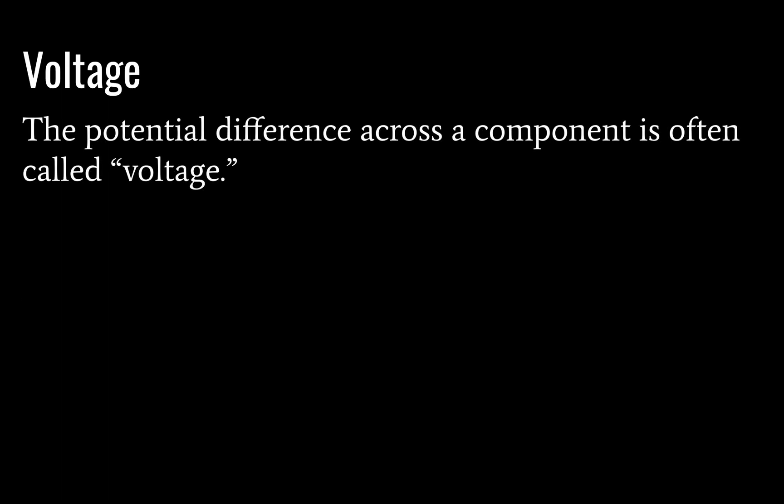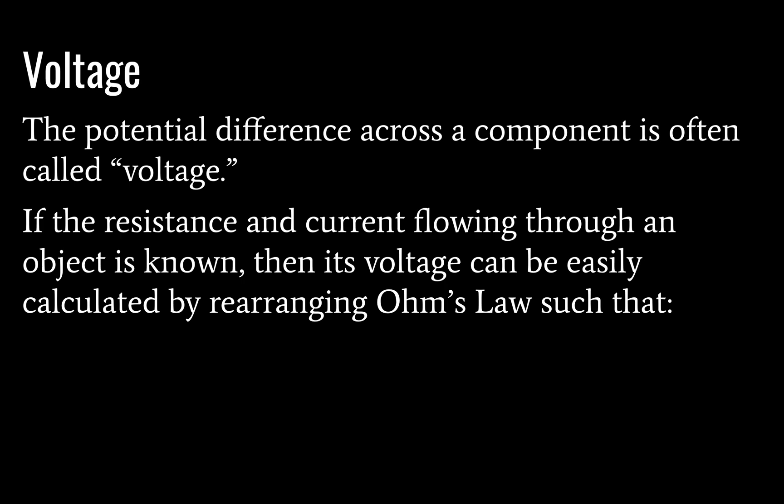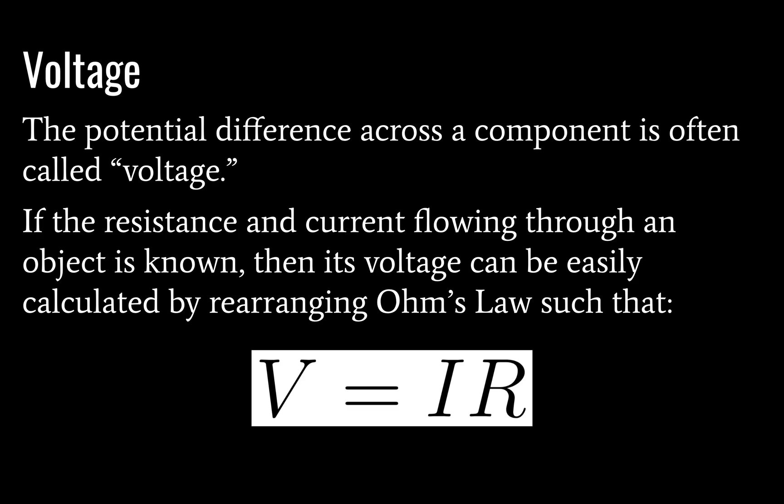Potential difference across a component is often called voltage — the unit is volts, which is why the terms are used interchangeably. If the resistance and current flowing through an object are known, then its voltage can easily be calculated by rearranging Ohm's law such that V is equal to I times R. This form is a little easier to remember, though it's not in the data booklet in this form — it appears in the previous form we discussed.